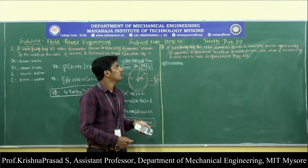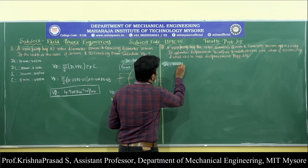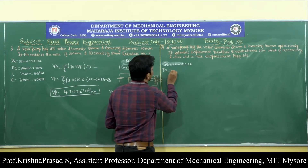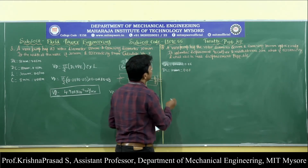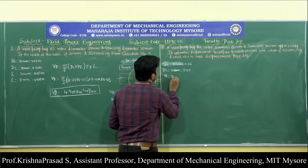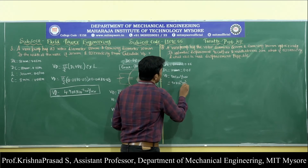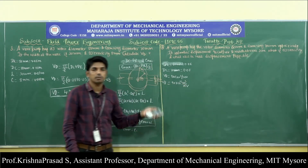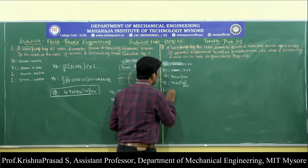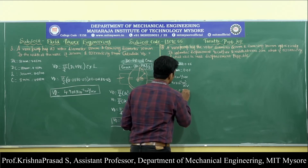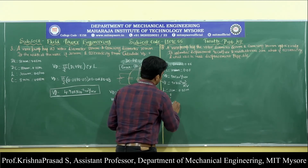In the second vane pump problem: DR = 60 mm = 0.06 m, DC = 80 mm = 0.08 m, VD = 90 cm³/rev = 90 × 10⁻⁶ m³/rev, and L = 3 cm = 0.03 m. We need to calculate the eccentricity and maximum volumetric displacement.